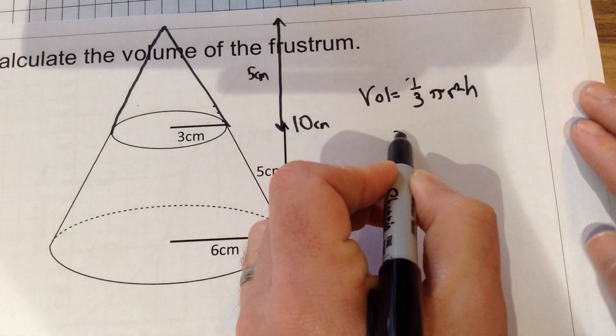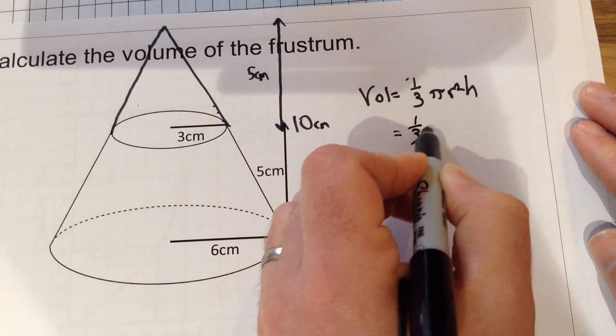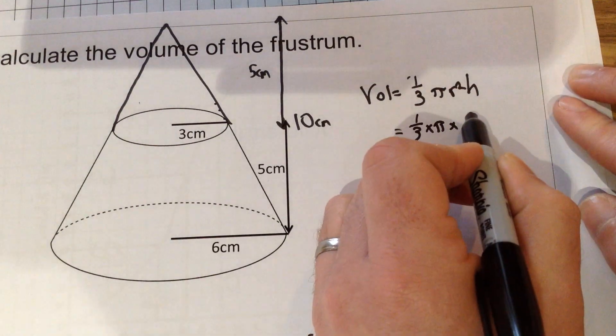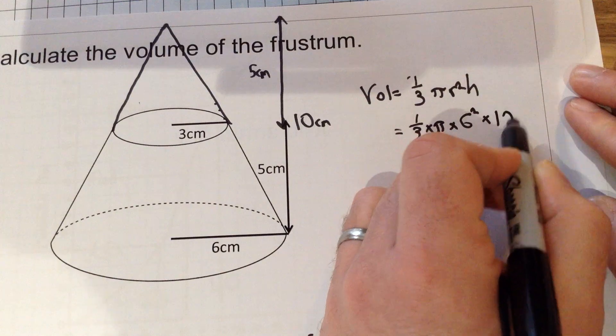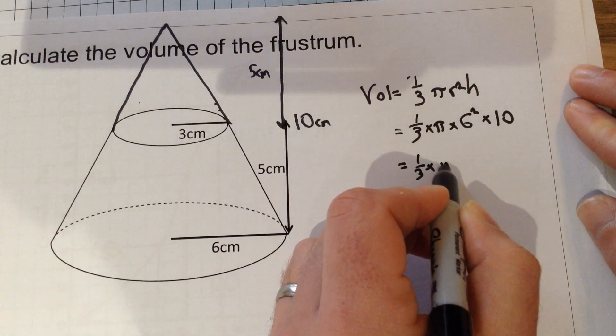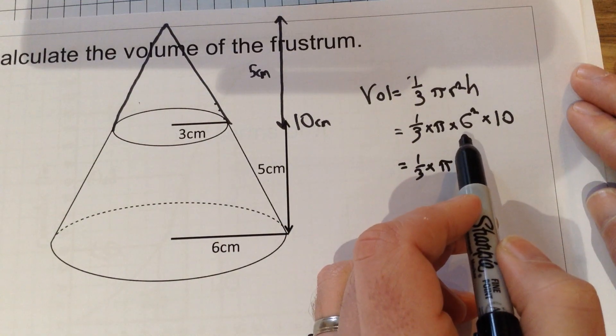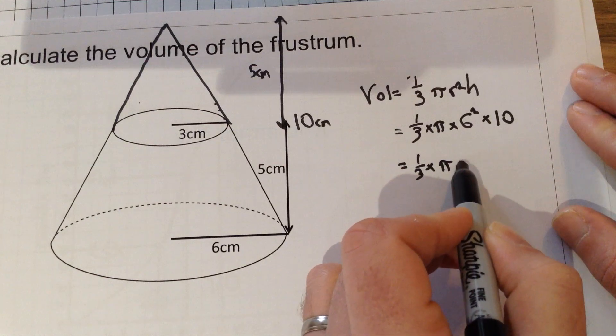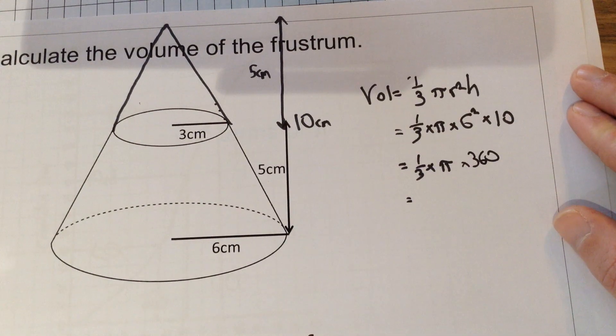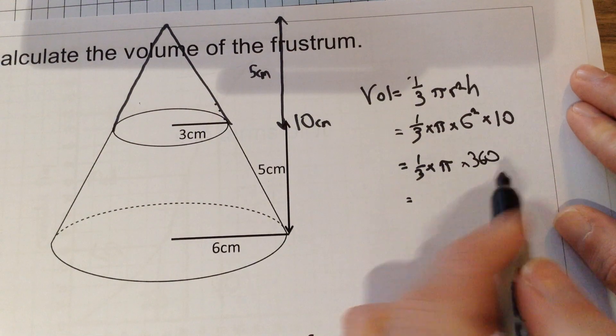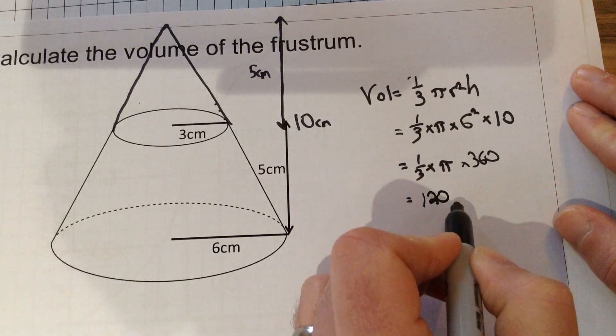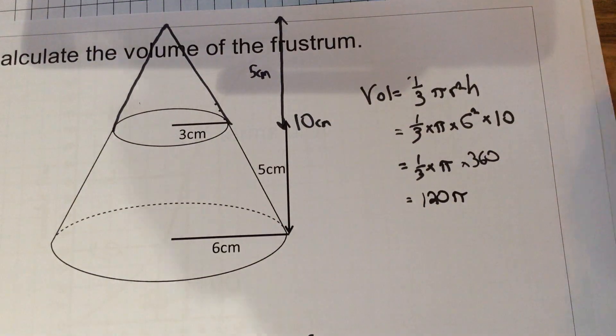For the larger cone, we would therefore have one-third times pi times radius squared, so the larger cone has a radius of 6, so 6 squared times 10. This would give us one-third times pi. Six squared is 36, times that by 10 is 360. A third of 360 is 120. I just divided 360 by 3, so it becomes 120. Because we're leaving our answer in terms of pi, it actually comes out as just 120π.